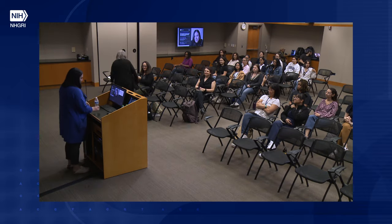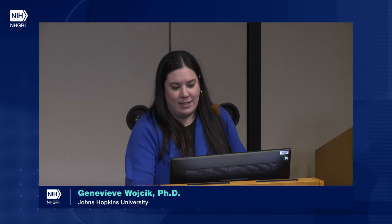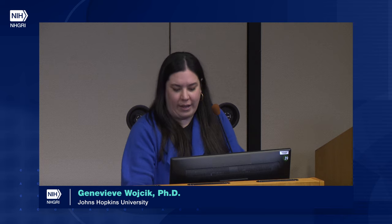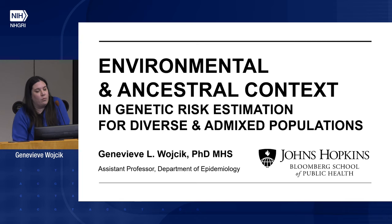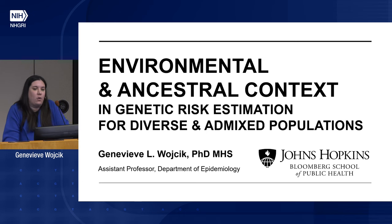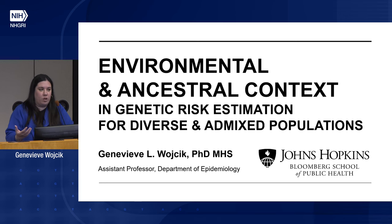Thank you for the very kind introduction, and I'm happy to be here. I see some familiar faces. So I was here eight months ago giving a different talk, and I've tried to make some things a little different so it's not completely redundant. Today, what I'm going to talk to you about is what we think about with polygenic scores — particularly how, when we model these scores, it's important to consider ancestry, but also environment and how they intersect, for a much more comprehensive look at how we model human health and what that means for the methods that we use.